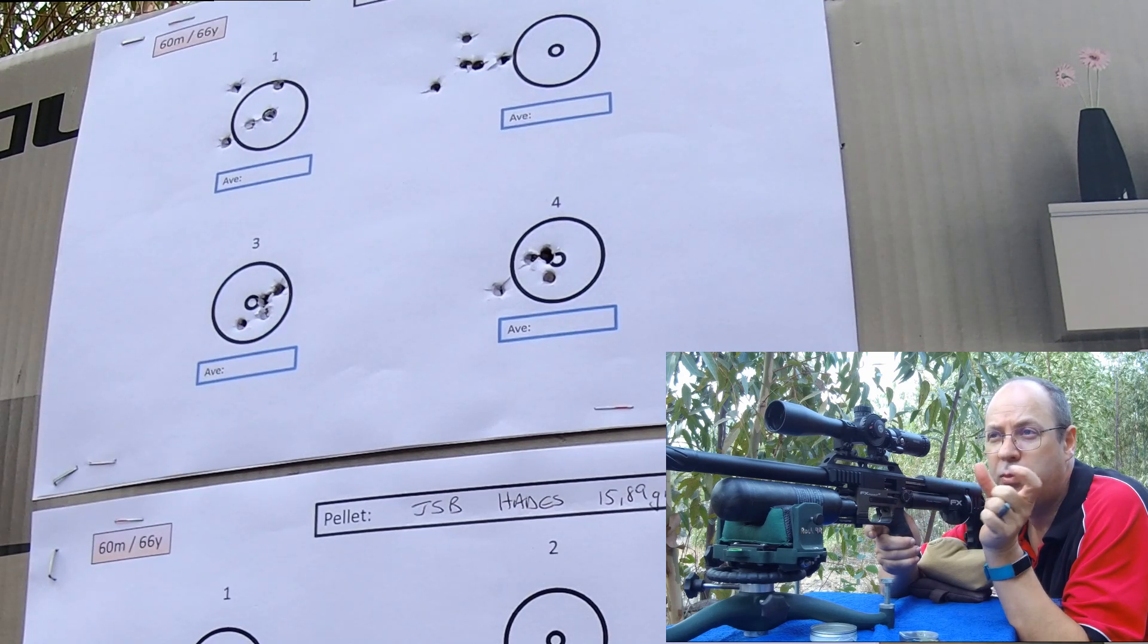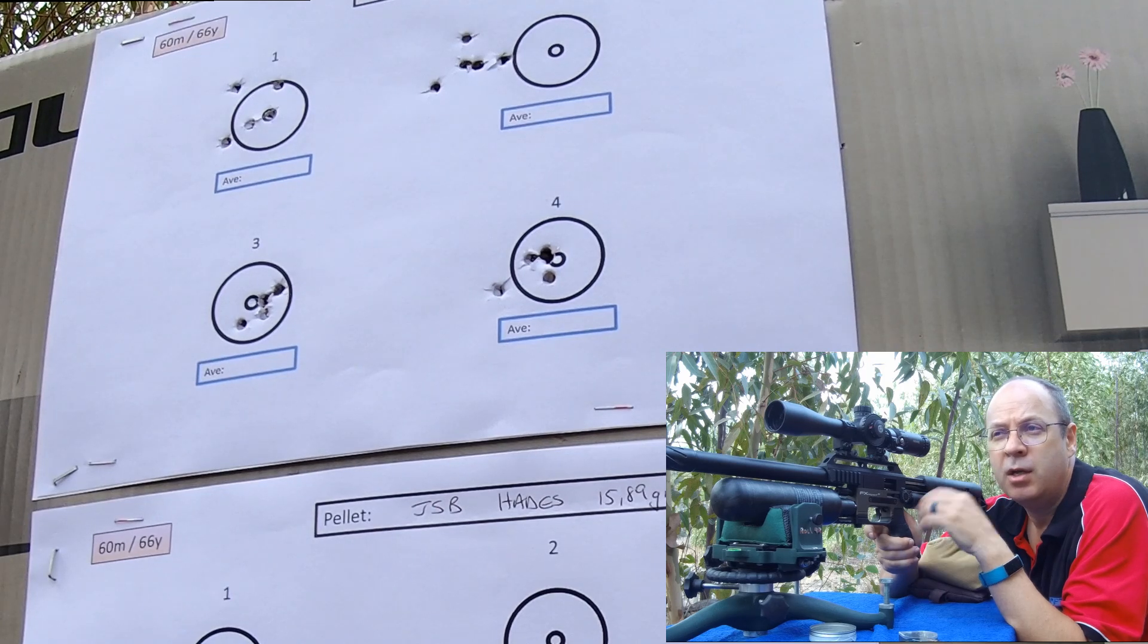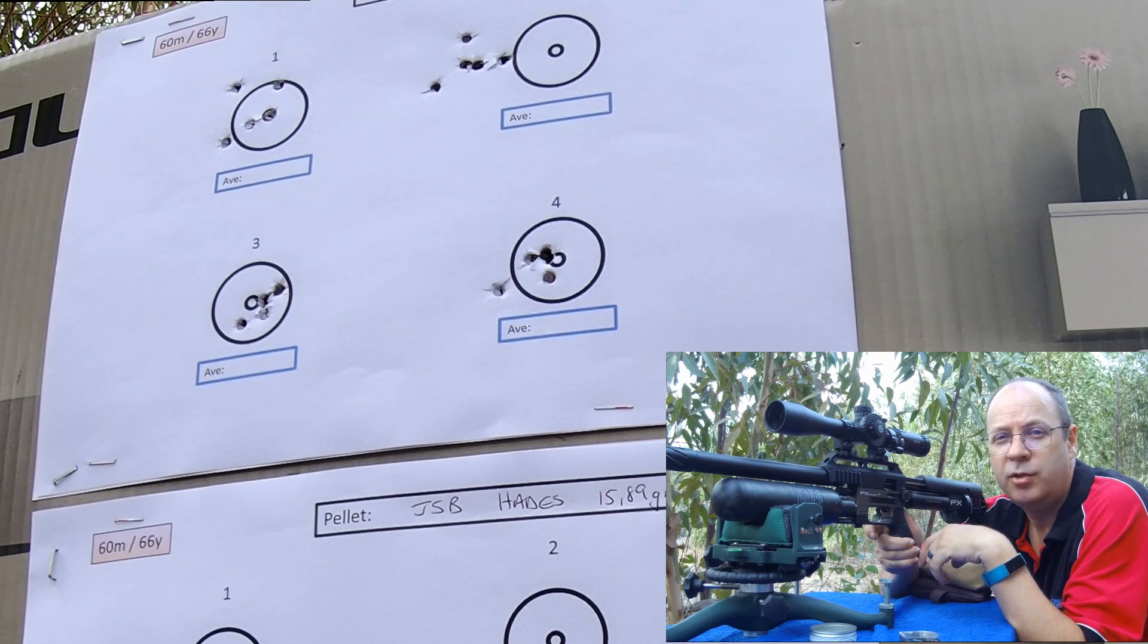On target three, the wind absolutely died down, as well as on target four. That's going to be an interesting measurement. What was supposed to be a 30 meter pellet turned out exceptional at 60 meters.